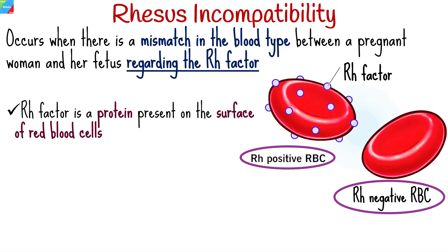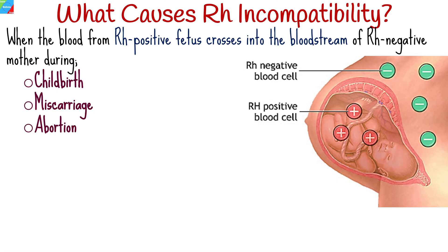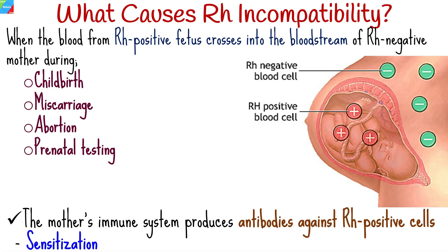The issue arises when an Rh negative mother carries an Rh positive fetus. During pregnancy, there might be instances where the blood from the fetus, which contains Rh positive red blood cells, crosses into the mother's bloodstream. This can happen during childbirth, miscarriage, abortion, or even prenatal testing. When this occurs, the mother's immune system recognizes the Rh positive cells as foreign invaders and produces antibodies against them.